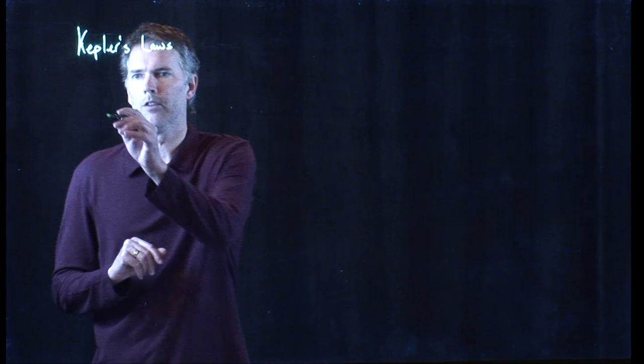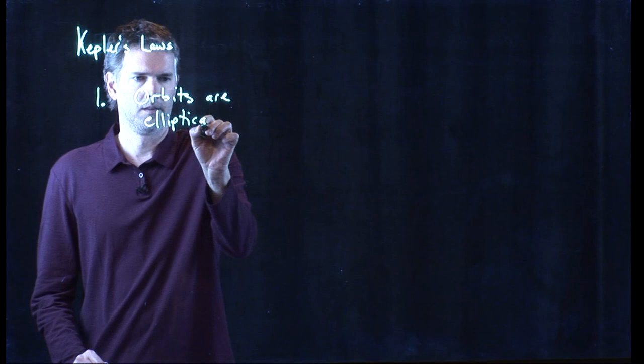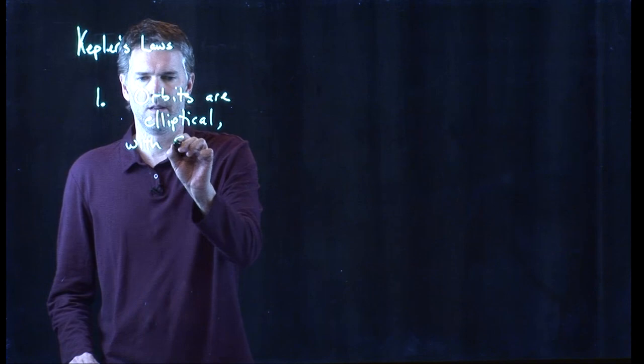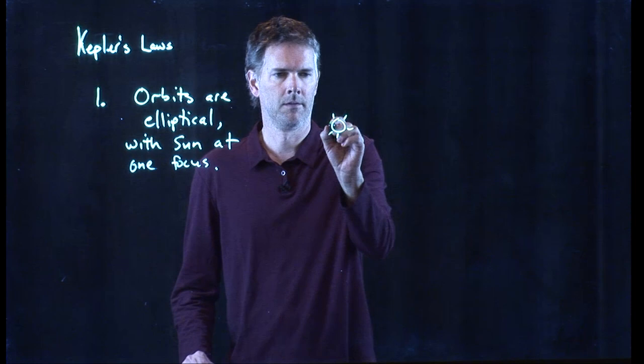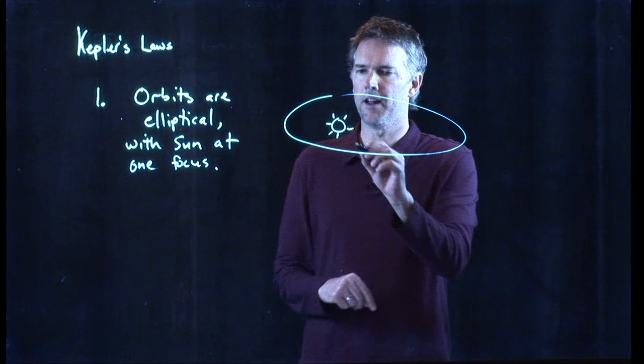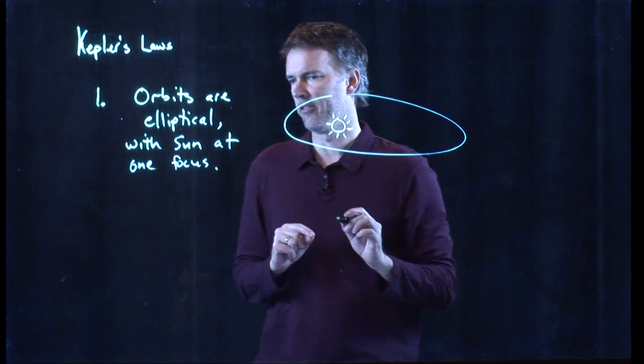The first is that orbits are elliptical, and they are elliptical with the Sun at one focus. So here's our Sun. Planet goes around the Sun like that. The Sun is at one focus of the ellipse. An ellipse has two foci. There's one there and there's one on the other side by symmetry. The Sun is at one of those foci.